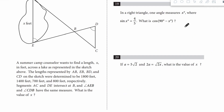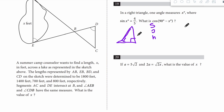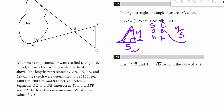Question 19 involves trigonometry but isn't too difficult. In a right triangle, sine of x is 4/5, meaning opposite over hypotenuse is 4 over 5. What is cosine of 90 minus x? The angle 90 minus x is the complementary angle. Cosine is adjacent over hypotenuse — for that angle, that's 4 over 5. The answer is 4/5.